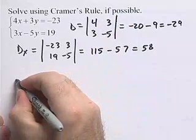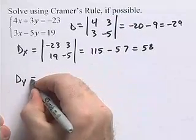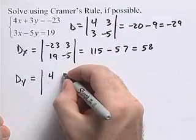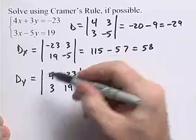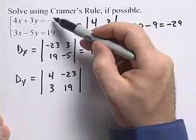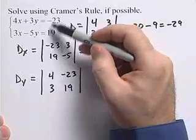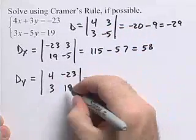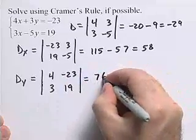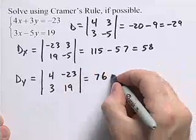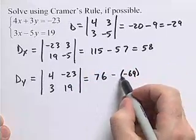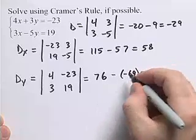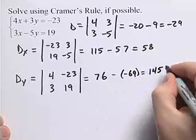Next, we need to find the determinant dy. dy is going to be the determinant of 4, negative 23, 3, 19. Notice that for dy, we replace the coefficients on y by the coefficients on the right-hand side here, these constant coefficients. 4 times 19 gives us 76, then minus negative 23 times 3 is going to be negative 69. So we have 76 minus a negative 69 gives us plus, so we get 145.